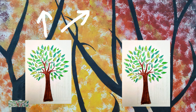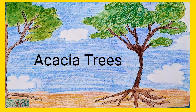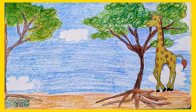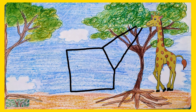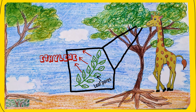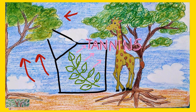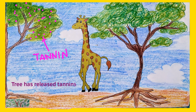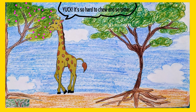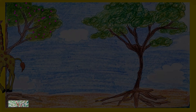Trees can also warn others of danger. For example, acacia trees have developed clever mechanisms to prevent giraffes from eating them. The tree releases ethylene gas through its leaf pores. Other acacias within 150 feet detect this warning and secrete tannins — bitter carbon-based compounds that inhibit digestion by interfering with proteins and digestive enzymes. This makes consumed leaves difficult to digest and hence drives the giraffe away.